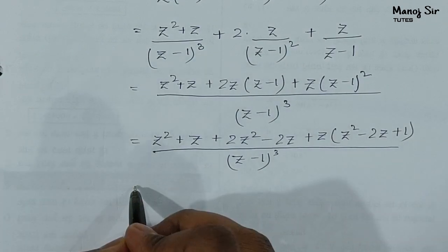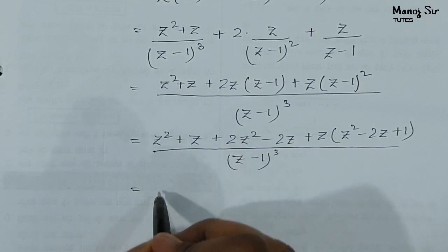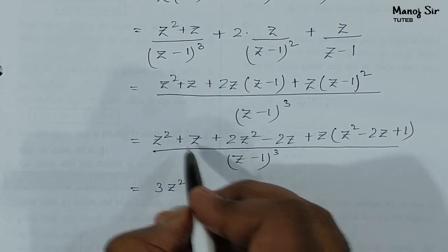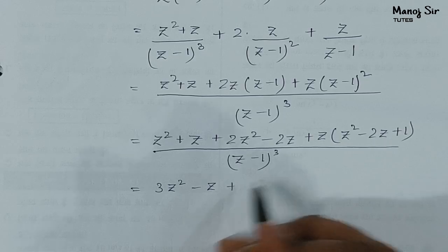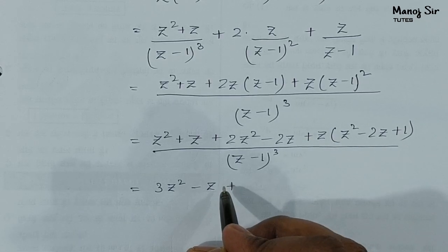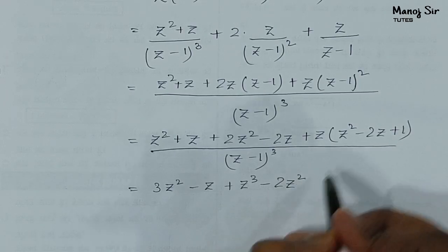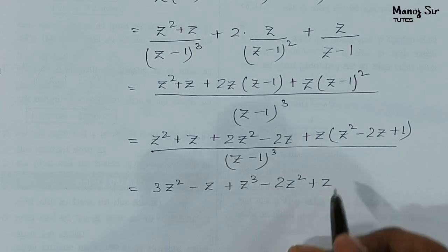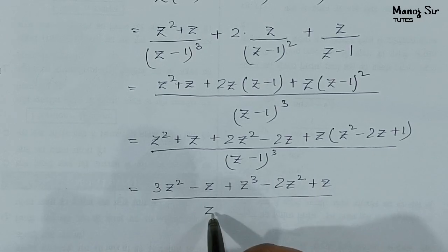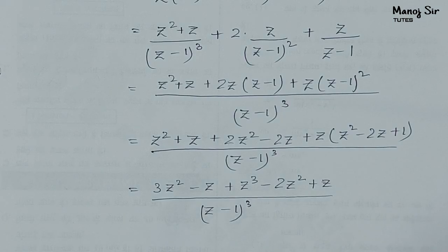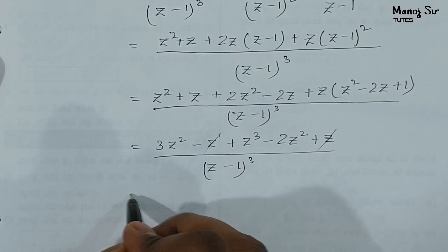Continuing to expand: z²+2z² gives 3z², and z−2z gives −z, plus z³−2z²+z, all over (z−1)³. Combining like terms: z³, then 3z²−2z² gives +z², and −z+z cancel out, over (z−1)³.